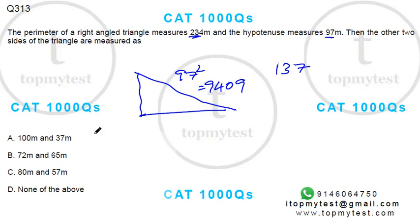100 cannot be one of the sides because hypotenuse is the longest side. So this is out. 72, 65. Do 72 and 65 add up to 137? Yes, they do.